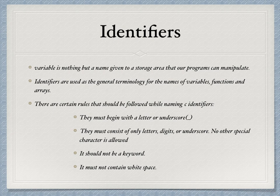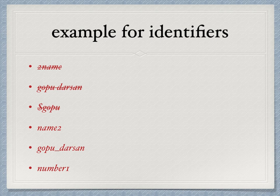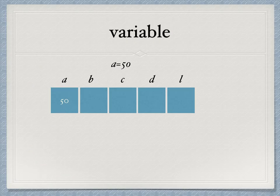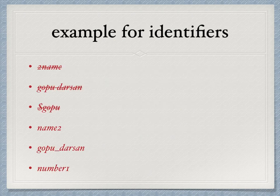These are some examples for identifiers. You can see the first one is named like 2name, which is not possible because according to the rule of identifiers you cannot start the name with a number. The second one is given as gopu space darsan, so you cannot have white spaces between names. The third one is $gopu, dollar is a special symbol, so you cannot give an identifier name like that.